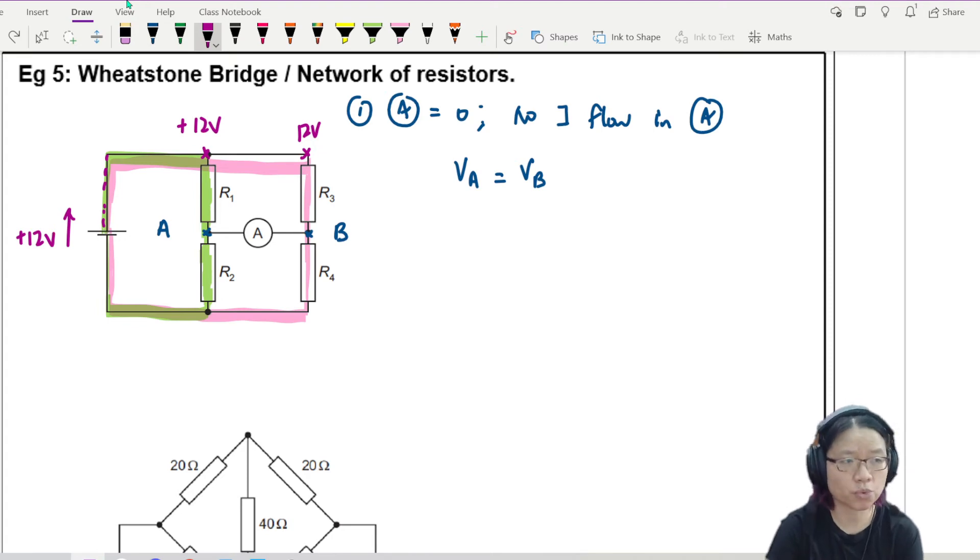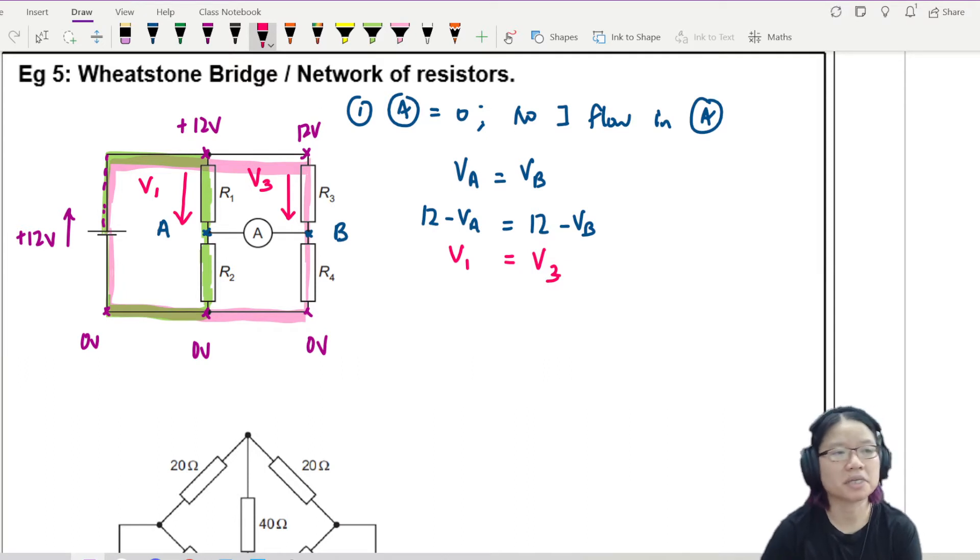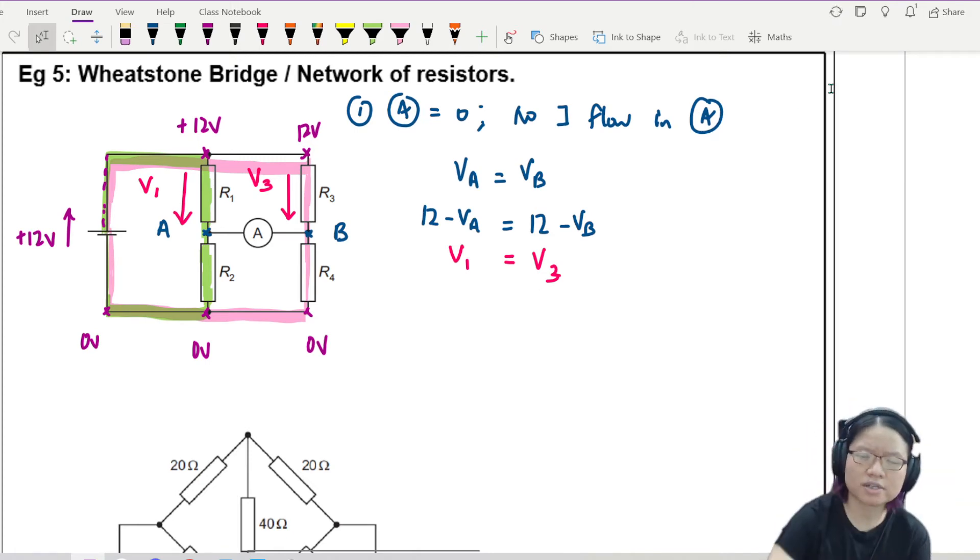We're going to make a condition or simplify our scenario first by using the most basic situation where number one, the ammeter reading is zero, indicating that there is no current flow in the ammeter. If there's no current flow in the ammeter, then the potential here, let's say A, and the potential here, let's say B, VA must be equal to VB.